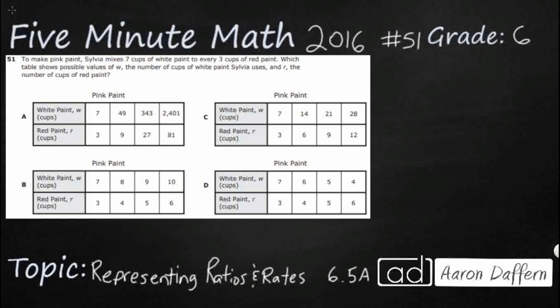So, we have Sylvia making pink paint, and she has a ratio of 7 cups of white to 3 cups of red. So, which table shows the possible values of W? There's our W right there, it's going to be white up at the top of each of these, to red.